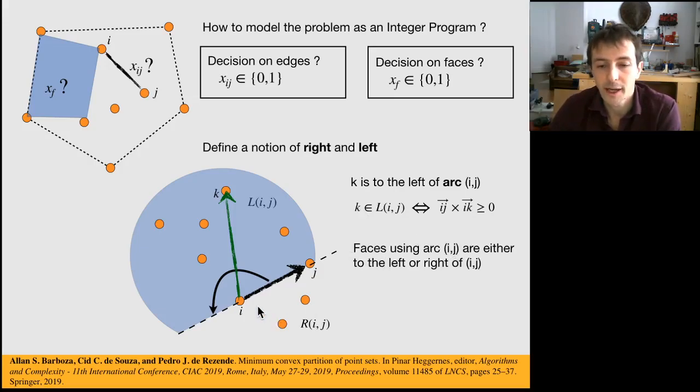And this also allows to define the left and right side regarding faces. A face using arc ij, or edge ij, will be either to the left, like this one, or to the right, like this one.